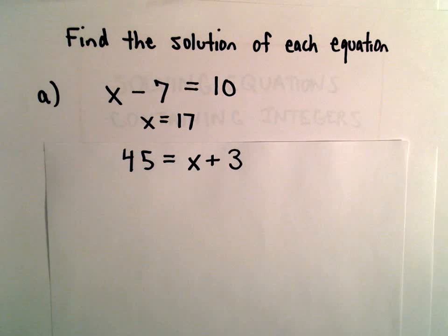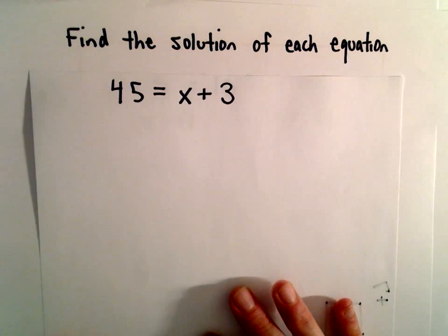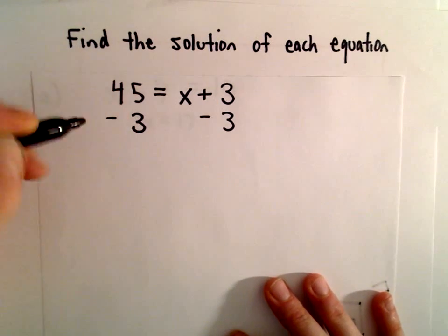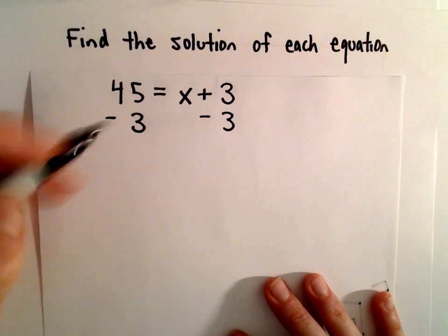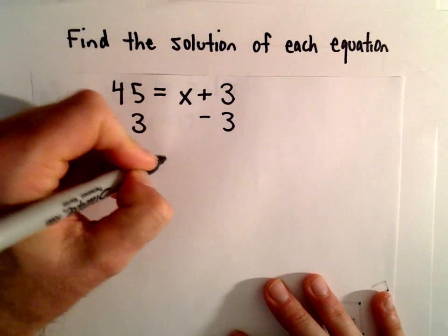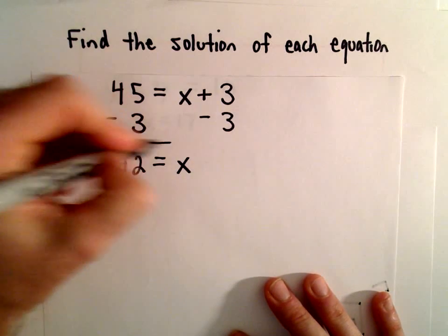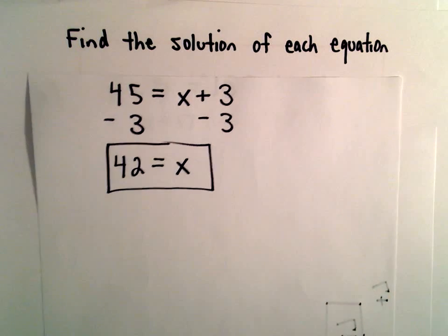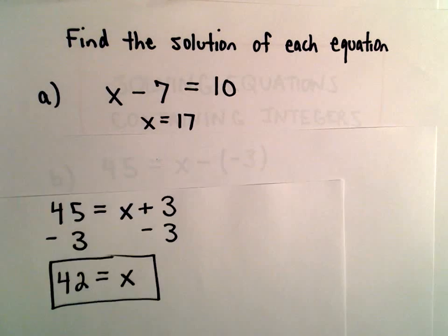Now, to solve for x, since we're adding 3, we subtract 3 from both sides. 45 minus 3 is 42. We're left with x on the right side, and our solution to part B is 42.